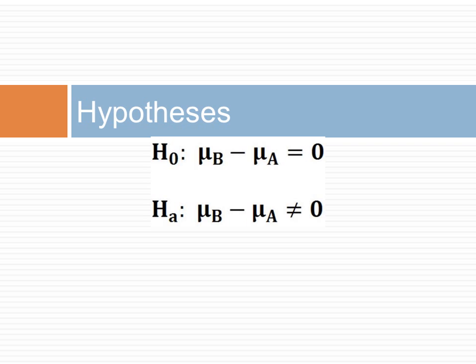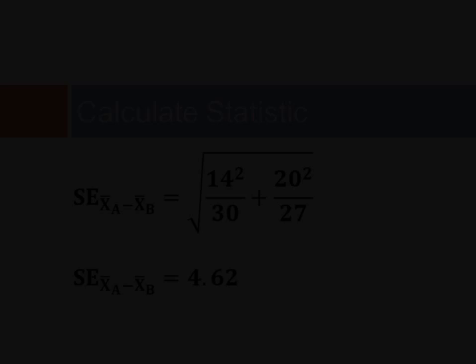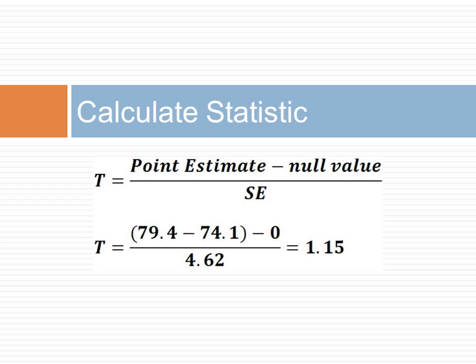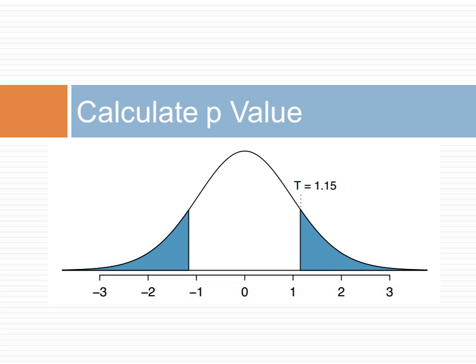Next we state the hypothesis. The null hypothesis is that there are no differences in the mean of version B and version A of the test. The alternative hypothesis is that there is a difference. Notice that these hypotheses require a two-sided test. We first calculate the standard error. The summary statistics provided us with both standard deviations and sample sizes. From these values, we calculate the standard error to be 4.62. Next we calculate the t statistic. The point estimate of the difference is put in, the null value is 0, and the standard error was previously estimated at 4.62. Therefore, the t value is 1.15. The minimum sample size is 27, so the degrees of freedom is 26.